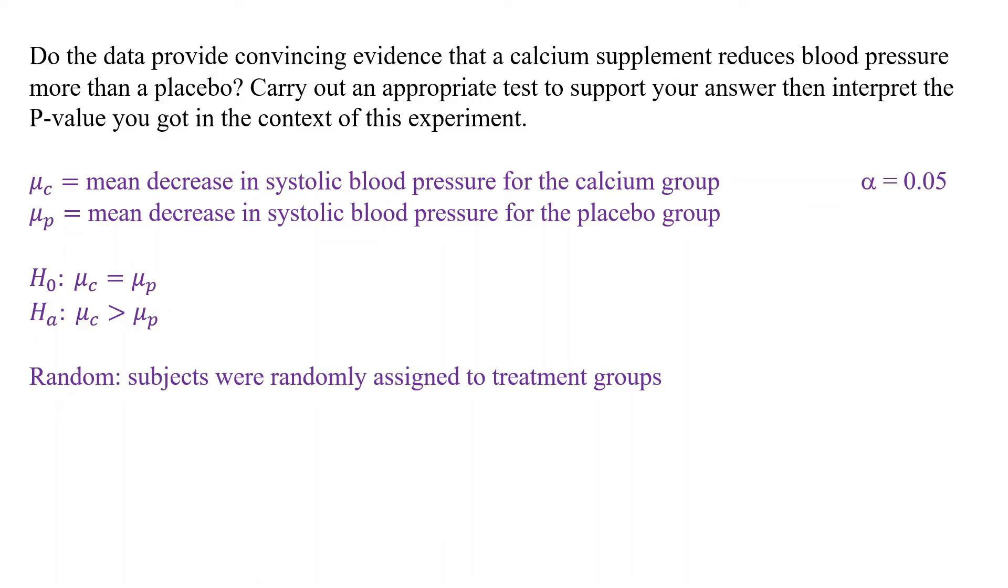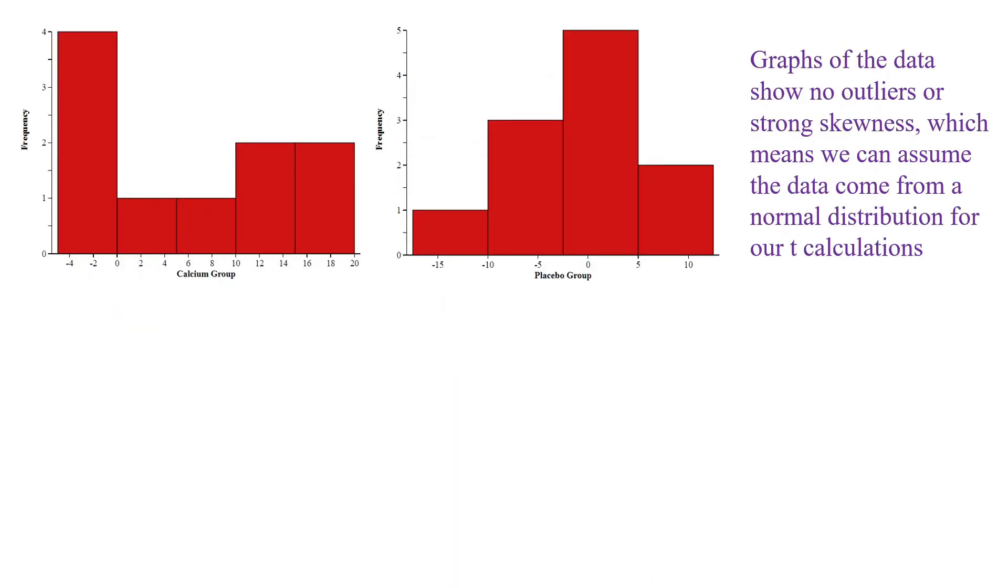Next, we want to check our conditions. Subjects were randomly assigned to the treatment groups. That's good. We don't have to check independence because we are conducting an experiment. And because both of our sample sizes are less than 30, we are going to graph the sample data here. So I have both graphs up here. Graphs of the data show no outliers or strong skewness. So we can proceed with our T calculations here. We can assume that the data came from a normal or approximately normal distribution.